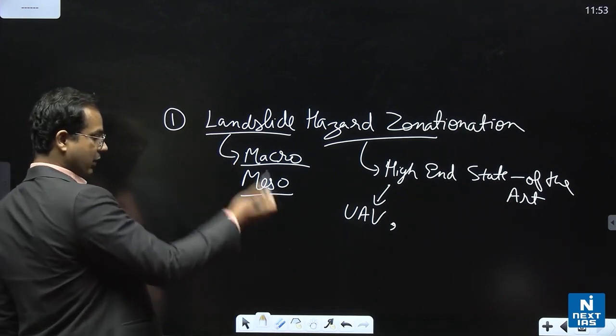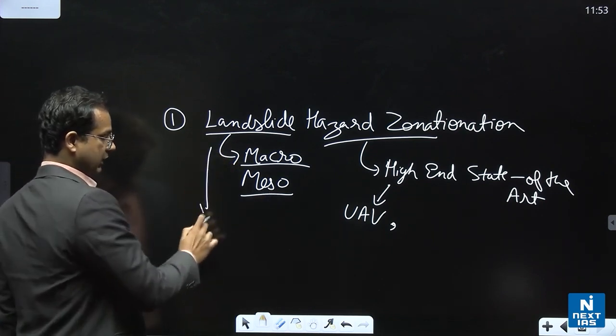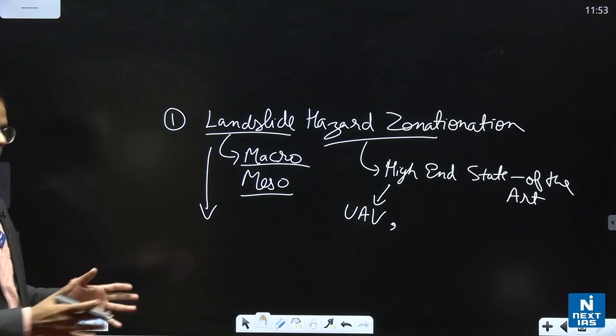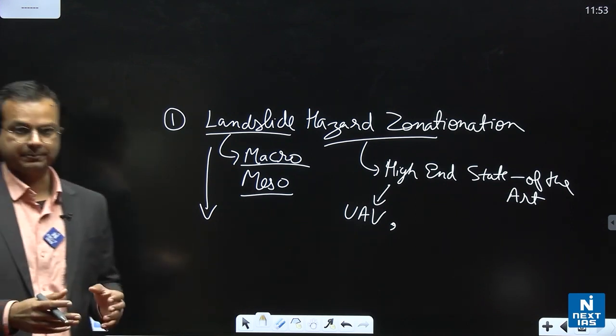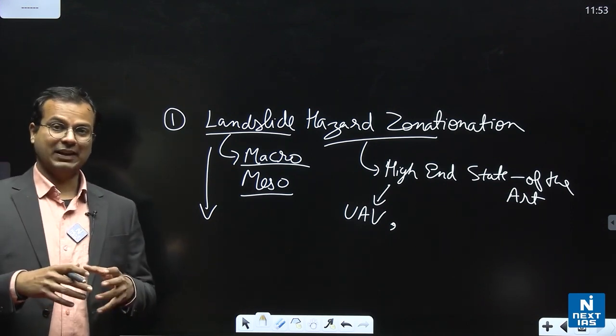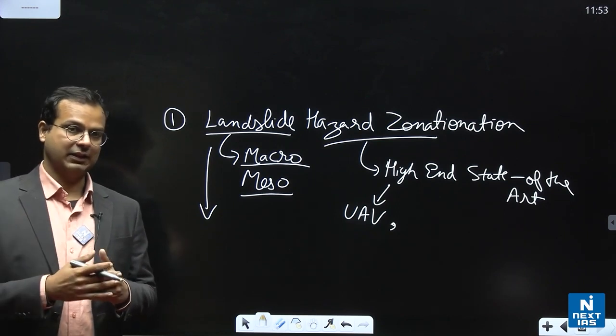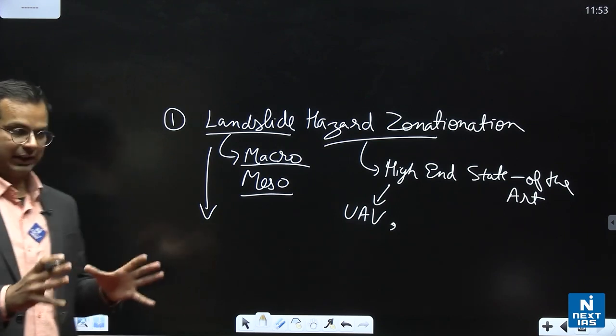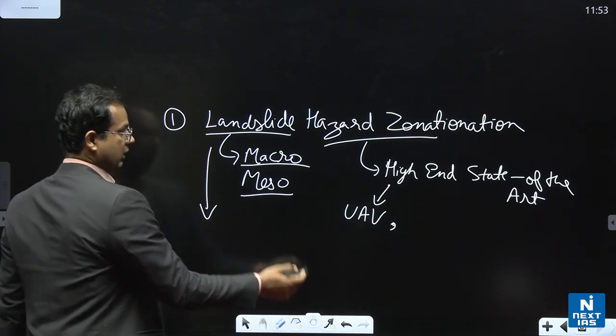The second point after mapping - what can be the logical step after the mapping? You should prepare a national level inventory for landslide, different landslides in India. So national or state level inventory you have to make for different landslides in India.